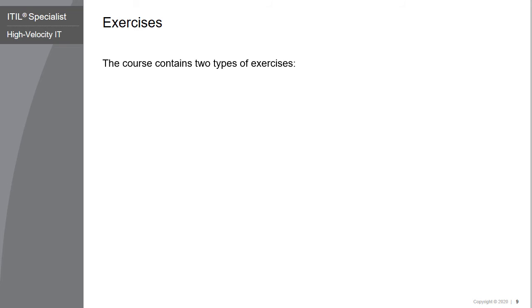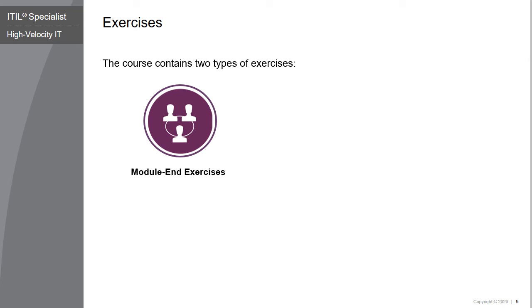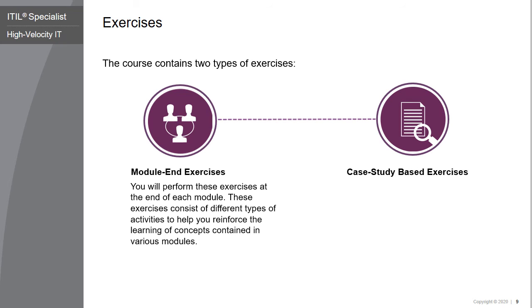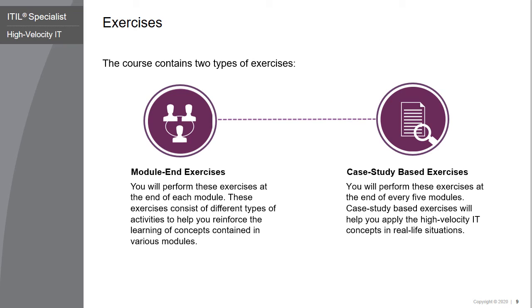The course contains two types of exercises: Module End Exercises and Case Study Based Exercises. Each module contains an exercise to reinforce the learning of concepts contained in it. These exercises will be application-focused and consist of different types of activities. You will perform case study-based exercises at the end of modules 5, 12, and 15. These exercises are based on concepts covered in a combination of modules and will help you apply the high-velocity IT concepts to real-life situations.